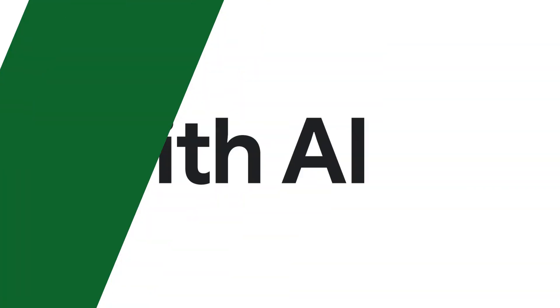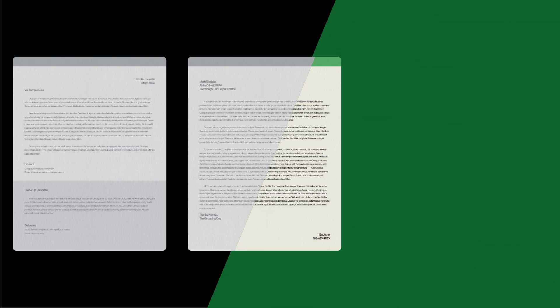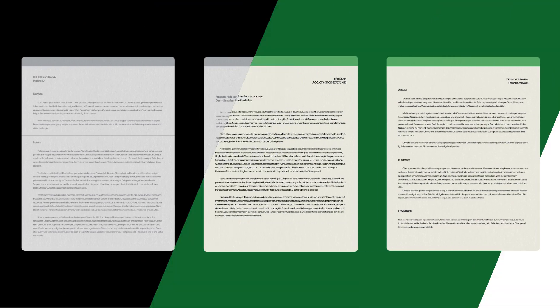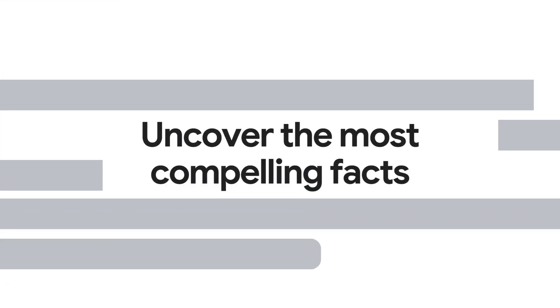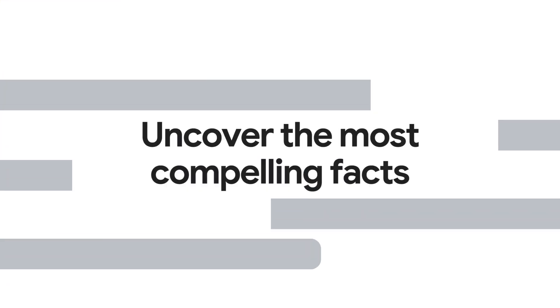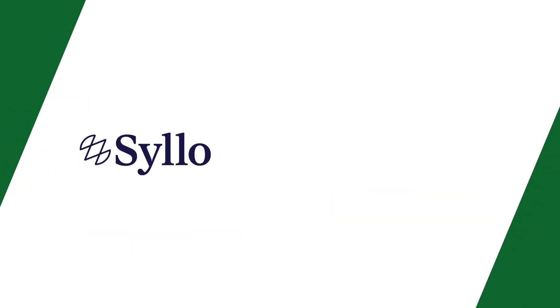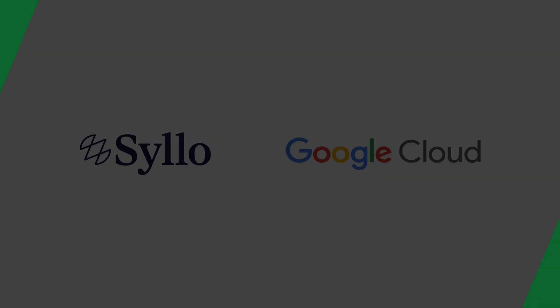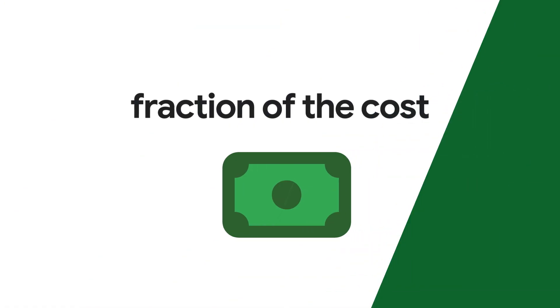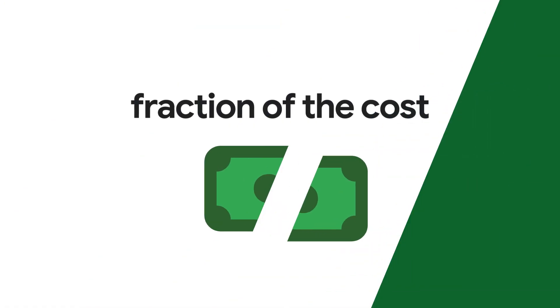Revolutionize litigation with AI that automates document review to uncover the most compelling facts. With CILO and Google Cloud, you can find more relevant documents, faster, at a fraction of the cost of human review.